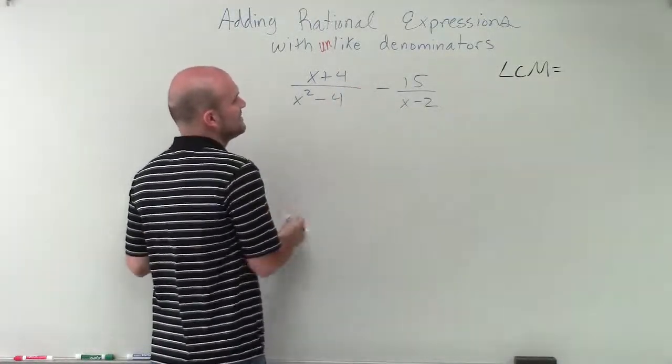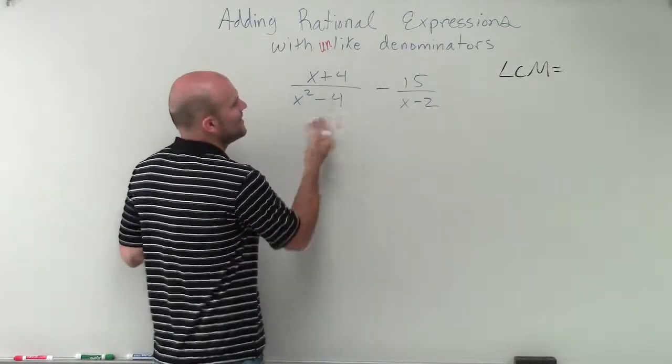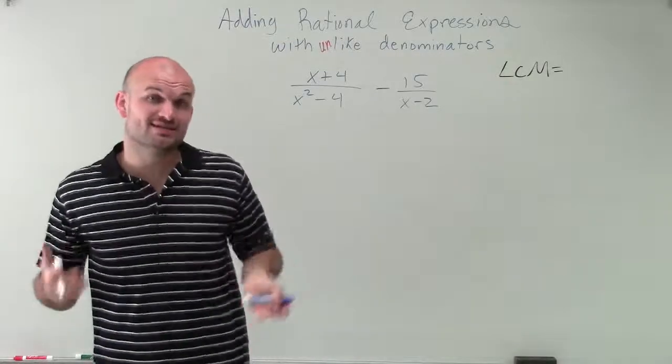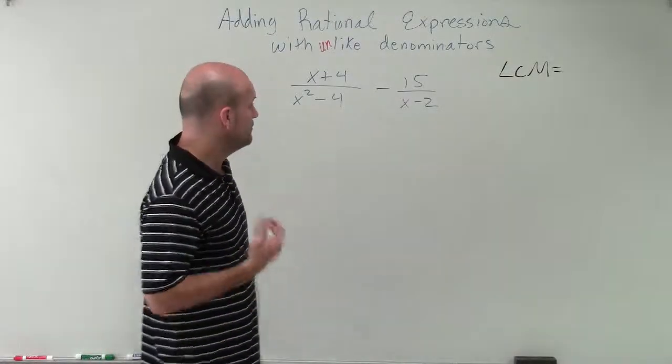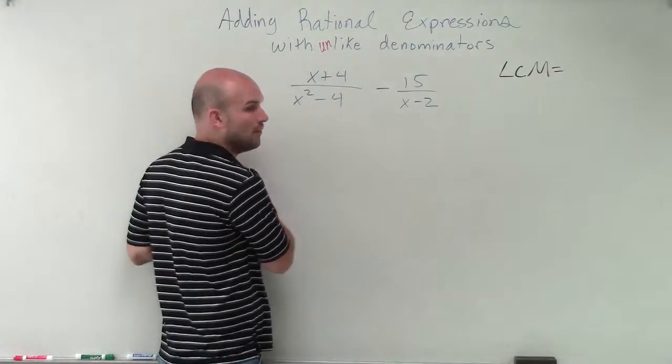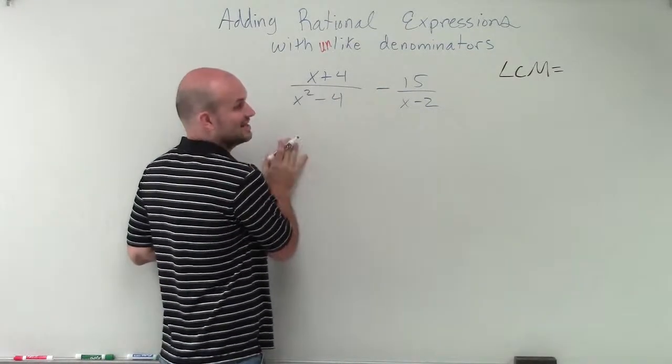Over here I have x plus 4, I can't really do anything with that. Here I have x squared minus 4. And whenever I see an x squared with two terms I'm always thinking difference of two squares. For it to be difference of two squares, I have to have the difference of the two values and I also have to have my 4 be a square number, which in this case it is.